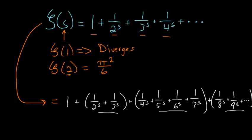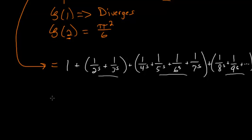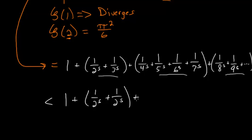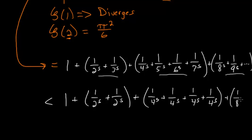The reason we do this is that now we can say the zeta function is always less than 1 plus 1 over 2 to the s plus 1 over 2 to the s, since 1 over 2 to the s is bigger than 1 over 3 to the s plus 1 over 4 to the s. We can keep going with that 4 times, and then add 1 over 8 to the s. Since there are 8 terms in that set of parentheses, we'll have 8 of these — multiplied by 8. The next set of parentheses would have 16 times 1 over 16 to the s, and so on.